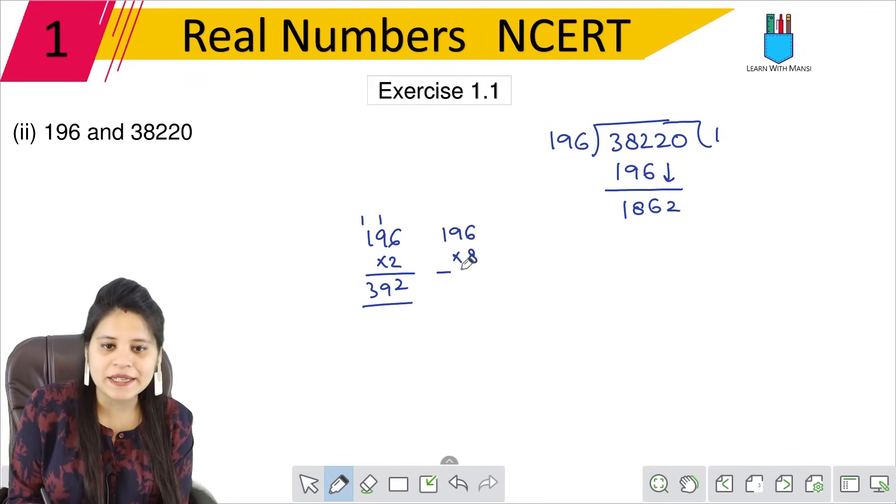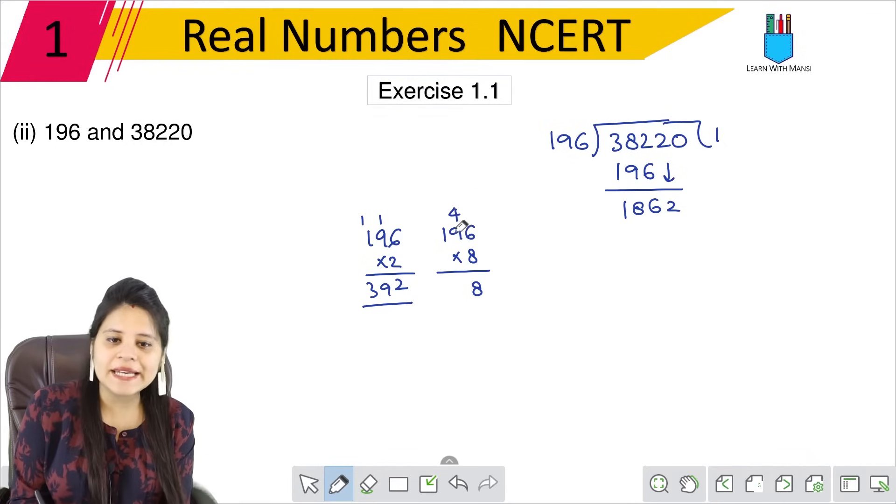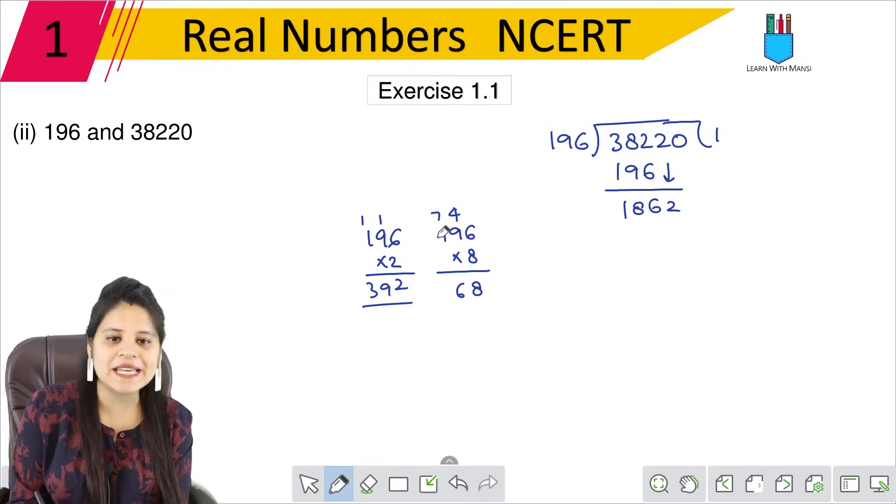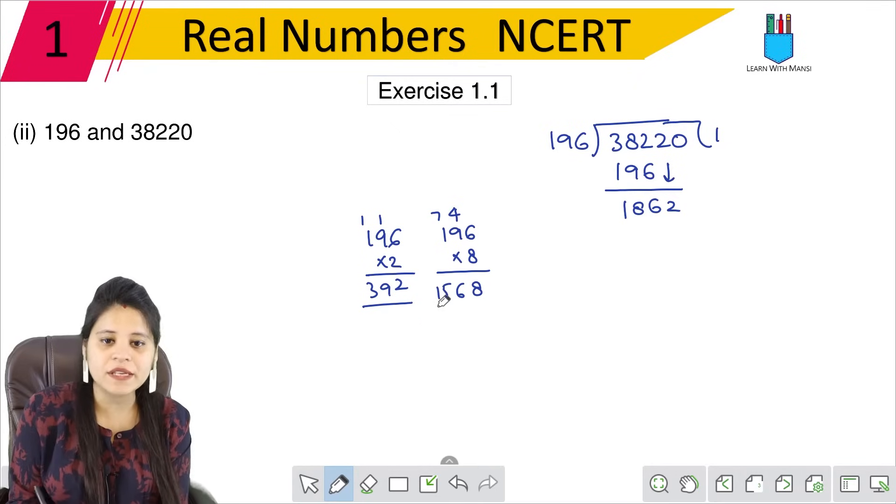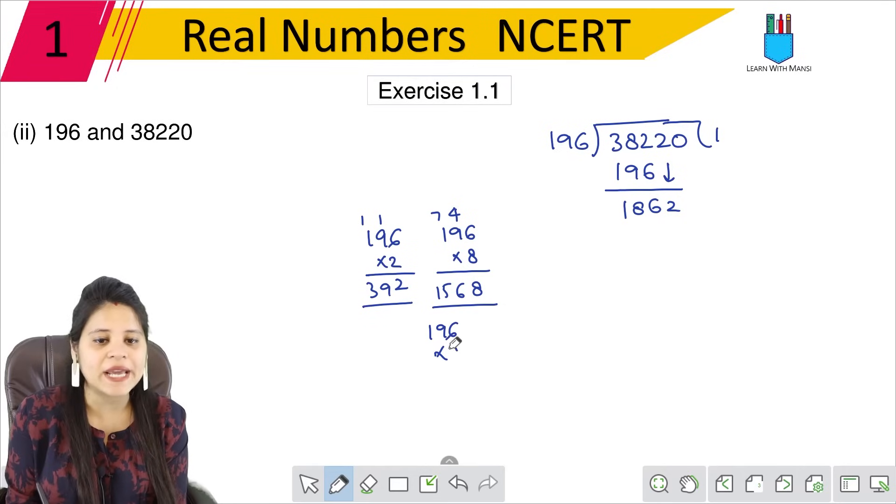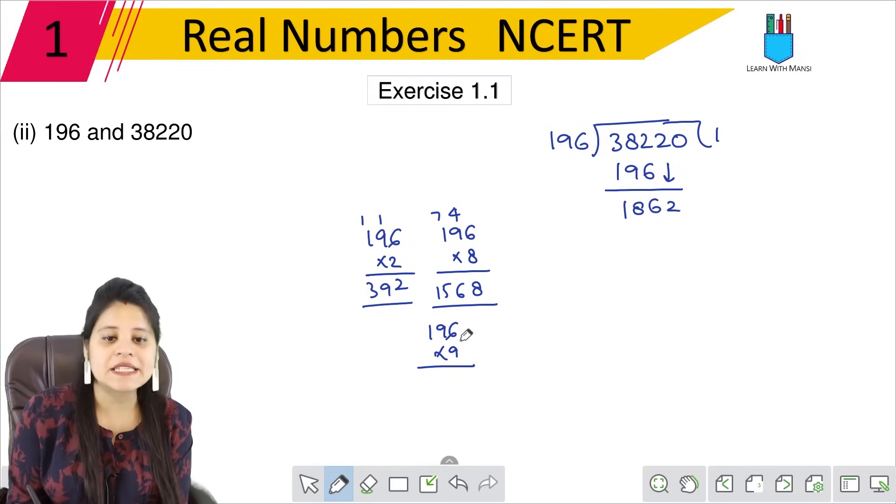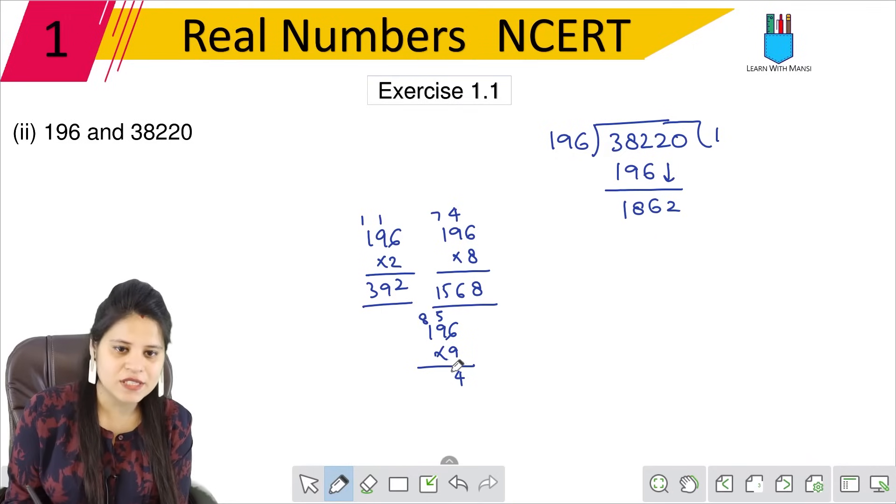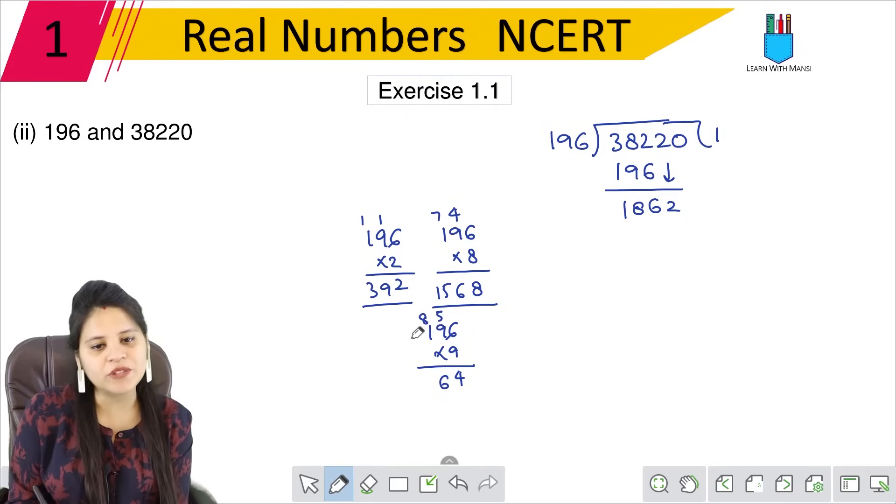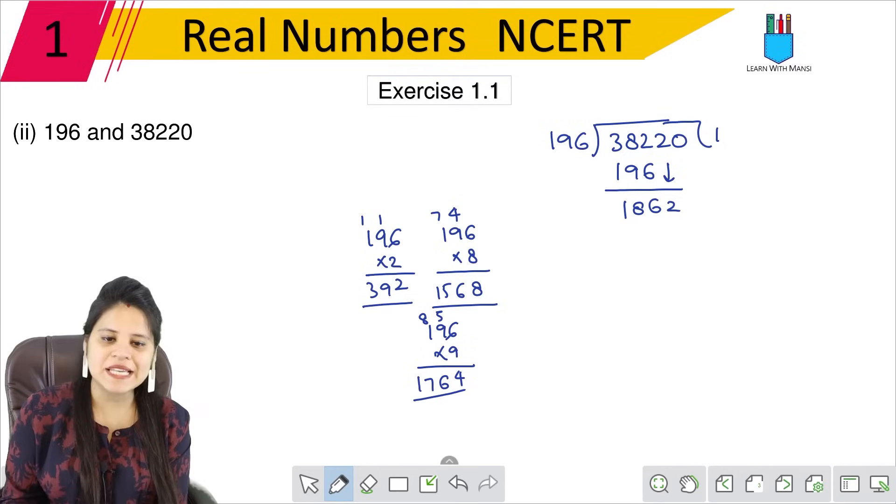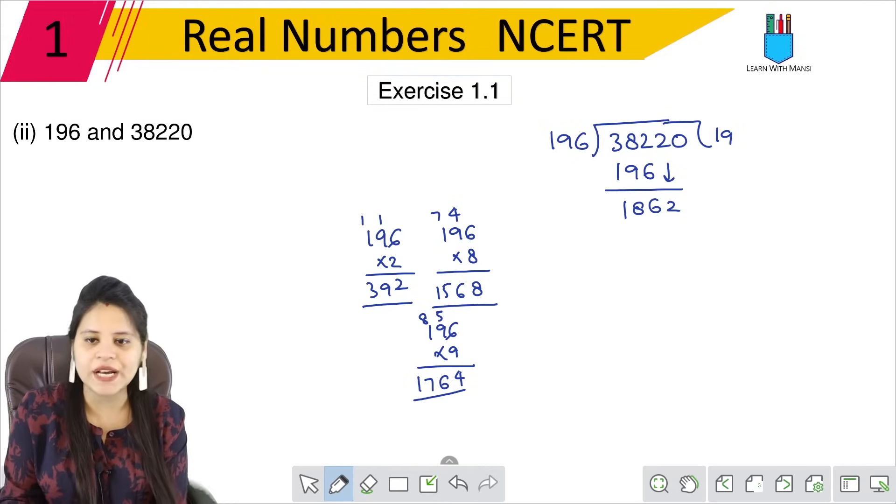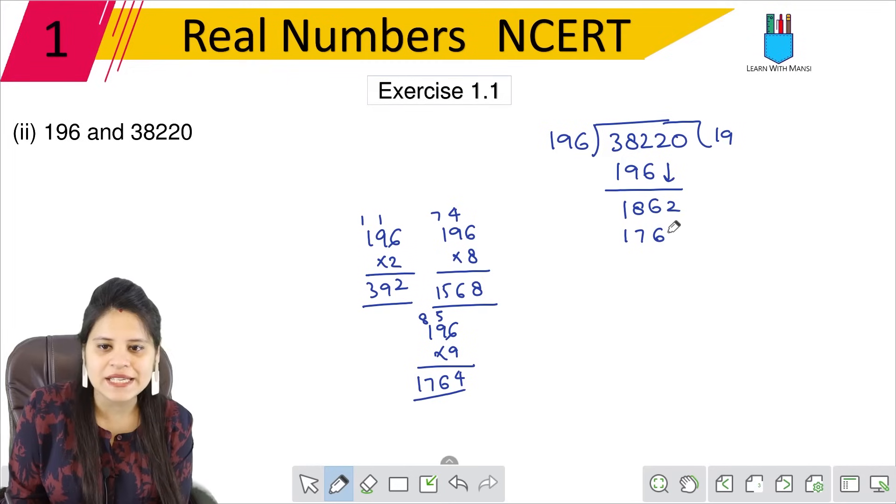Let's continue. We try multiplying 196 by 8, which gives us 1568, but that's too small. Let's try 196 into 9, which gives 1764. That's also going to work. So from 9, we get the quotient.